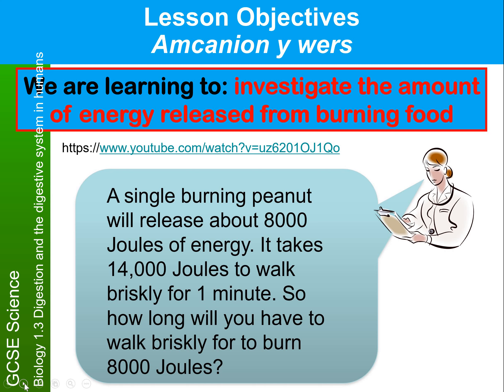As the peanut was being burned, it was releasing heat energy and light energy. The heat energy is being measured. A single burning peanut, as you can see at the bottom there, will release about 8,000 joules of energy. It takes about 14,000 joules for you to walk briskly for a minute. So have a go at this calculation: how long will you have to walk briskly to burn 8,000 joules?